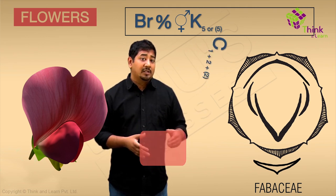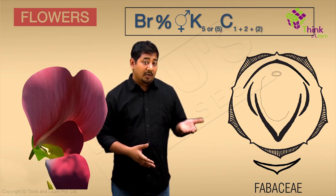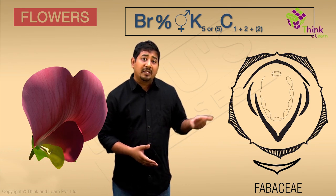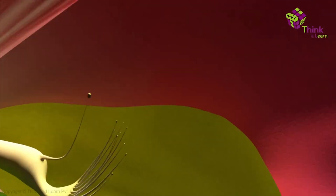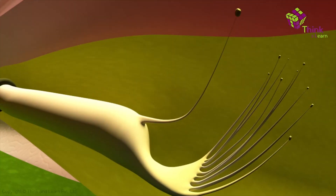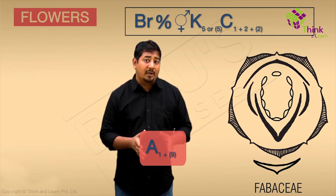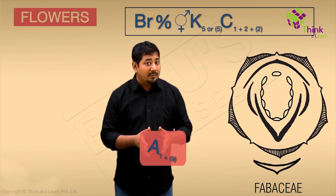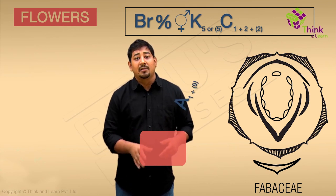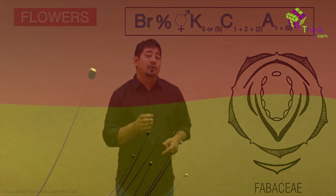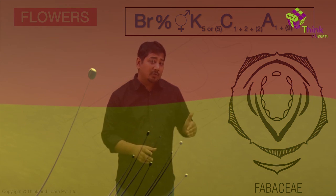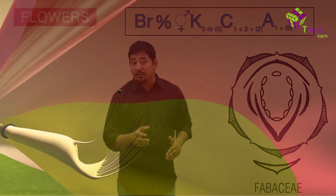Moving on to the next whorl, that is the androecium. Here there are normally ten stamens arranged in two separate bundles, that is they are diadelphous. One bundle consists of one stamen, and the other consists of nine stamens that are fused together, represented in the floral formula as 1 plus 9 in parentheses. The anthers have two lobes, that is they are dithecous, and the filament is bent inwards towards the flower, that is it is introrse.